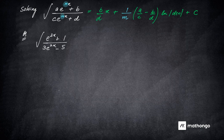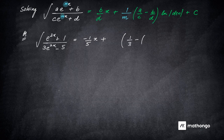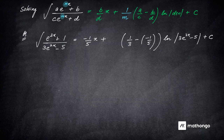Revisiting the earlier question with e^(2x): it was minus 1 by 5 times x, plus (1 by 3 minus minus 1 by 5) times ln mod(3x minus 5) plus C. The only change to add is the factor 1 by 2 alongside those terms, because m equals 2. That is the only modification. This is how simple these kinds of problems become.